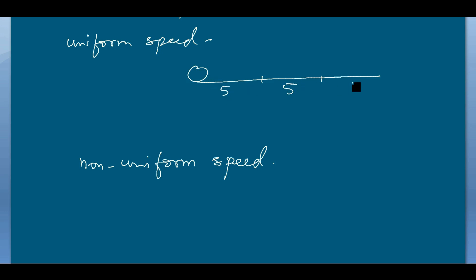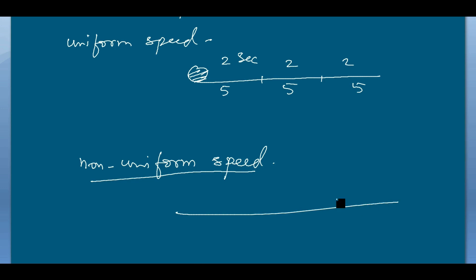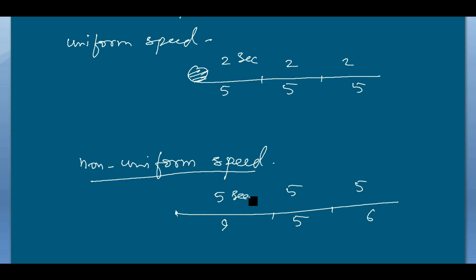Suppose the distance is 5 meters in 3 parts, and it covers each part in 2 seconds — so this object has uniform speed. Similarly, if the object covers 3 unequal distances like 9 meters, 5 meters, and 6 meters in equal time intervals of 5 seconds each, then we say this object has non-uniform speed.